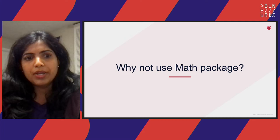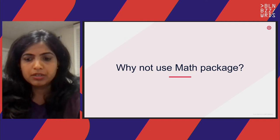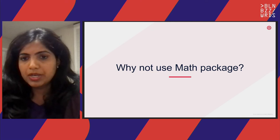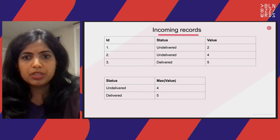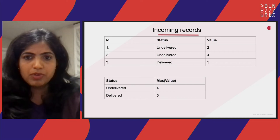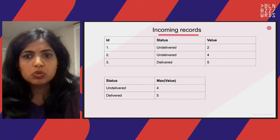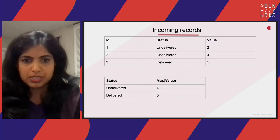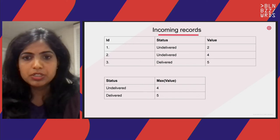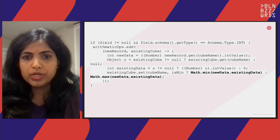So why not just use math.min or math.max to calculate the min and max? Coming to the calculation details — we'll look at why it will result in incorrect results. Consider a stream of events with incoming records: ID one status undelivered value two, then status undelivered value four, and then status delivered value five. When calculating the max of value for a given status, undelivered would be four. Using math.max gives you correct results in this simple case.